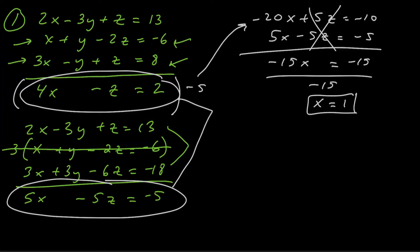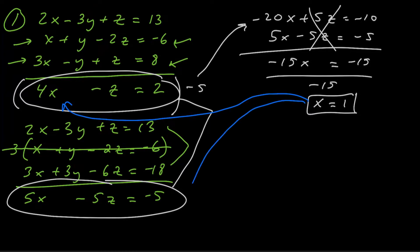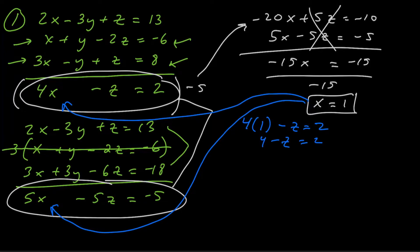We went from three variables and three equations, to two variables and two equations, down to one variable and one equation. Now we start back-substituting x equals 1 into one of the two-variable equations to solve for z. Using the top equation: 4 times 1 minus z equals 2, so 4 minus z equals 2. Subtracting 4 from both sides gives negative z equals negative 2, so z equals 2.